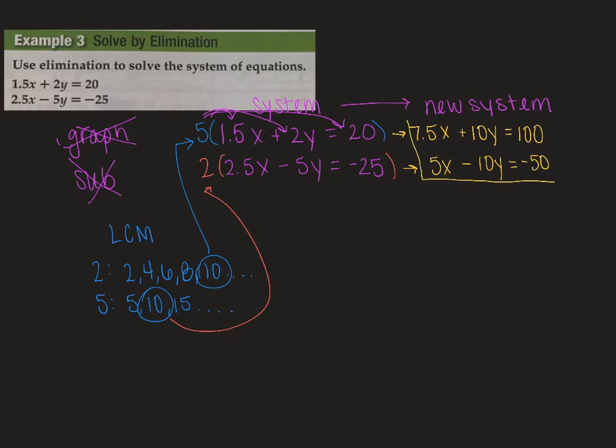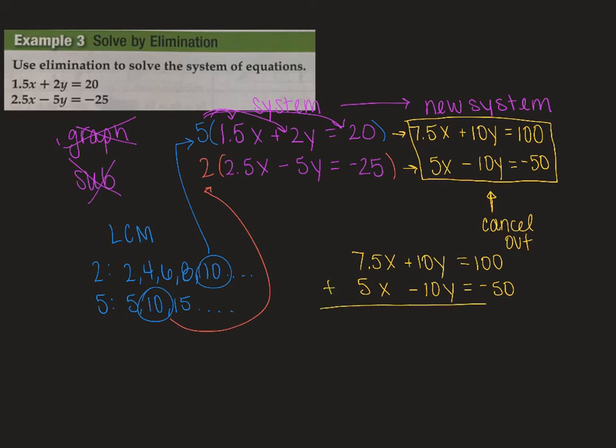This is now what we're going to be working with. You can see that our y's, when I add them together, they will cancel out. That's that whole idea of elimination is to eliminate a variable. So looking at our new system, we have 7.5x plus 10y equals 100. And we have 5x minus 10y equals negative 50. What you can do is, I can just slap like a big addition sign with the bar, and you just add straight down.